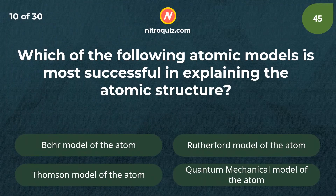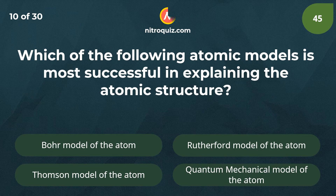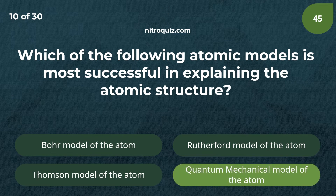Which of the following atomic models is the most successful in explaining the atomic structure? Answer is the quantum mechanical model of the atom.